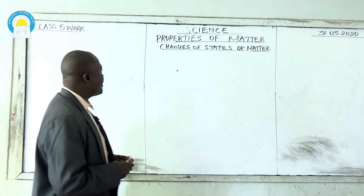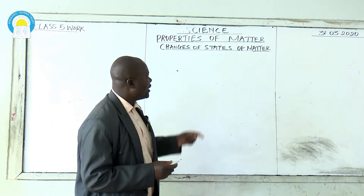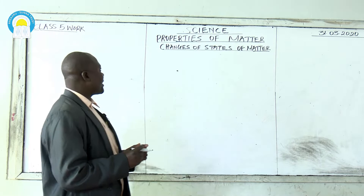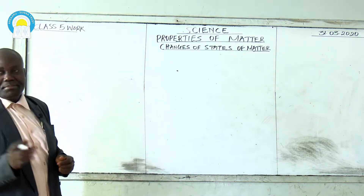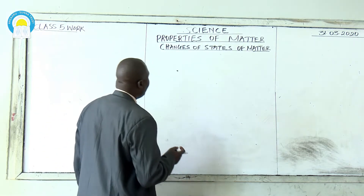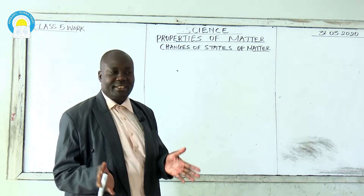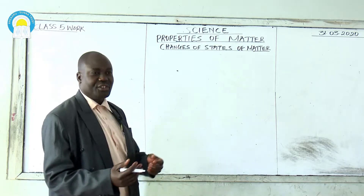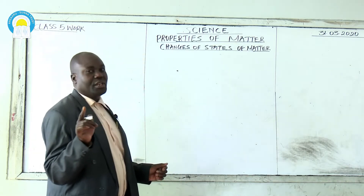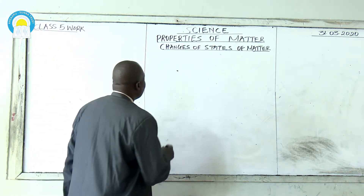Today we are going to start on the second part of this topic from class 5, which is known as changes of states of matter. Just like I told you yesterday, this topic is coming from standard 5, and it's from page 106 to page 128 of Primer Science class 5. I'll also be telling you questions that have come in KCP examinations so that when you are doing your revision, you can understand very well.